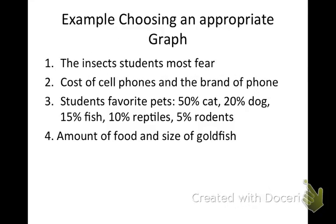Copy down this example: choosing an appropriate graph. Pause the video, copy this down, and when you're ready, hit play. We're going to decide what type of graph would best be used. The insects students most fear—we know there are many different types of insects, so we're going to use a bar or column graph because there are many categories. Next, cost of cell phones and the brand of the phone. Because there are many different types of phones and brands, we're going to use a bar graph again.